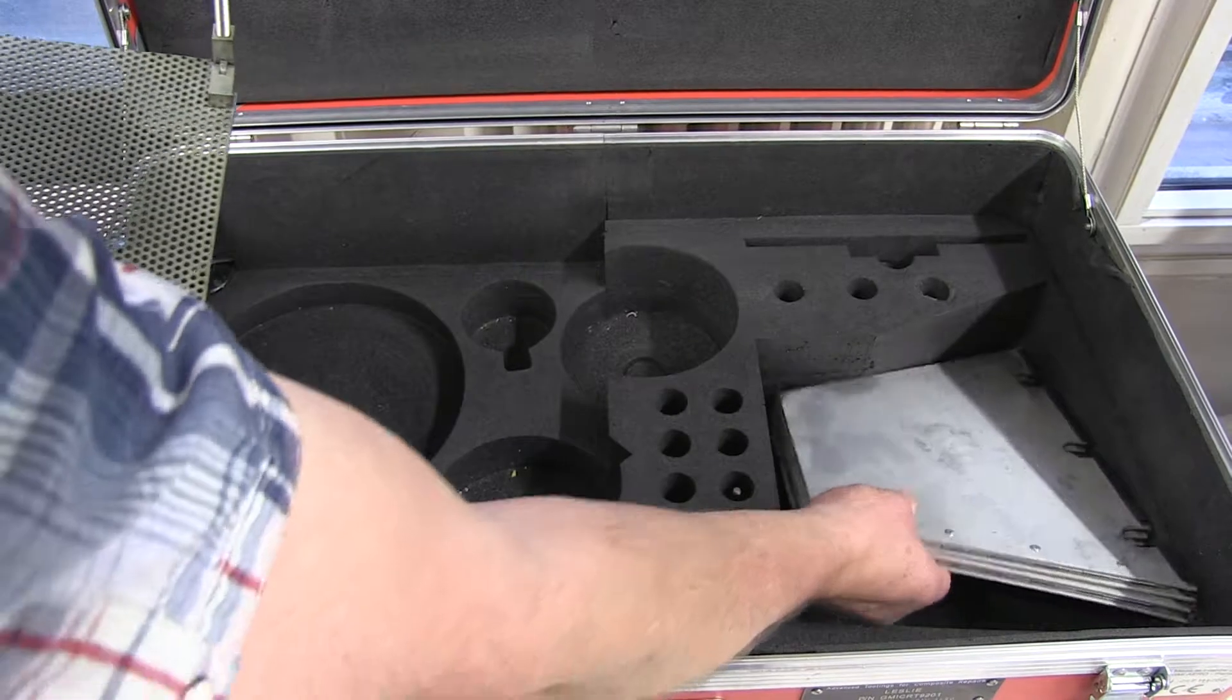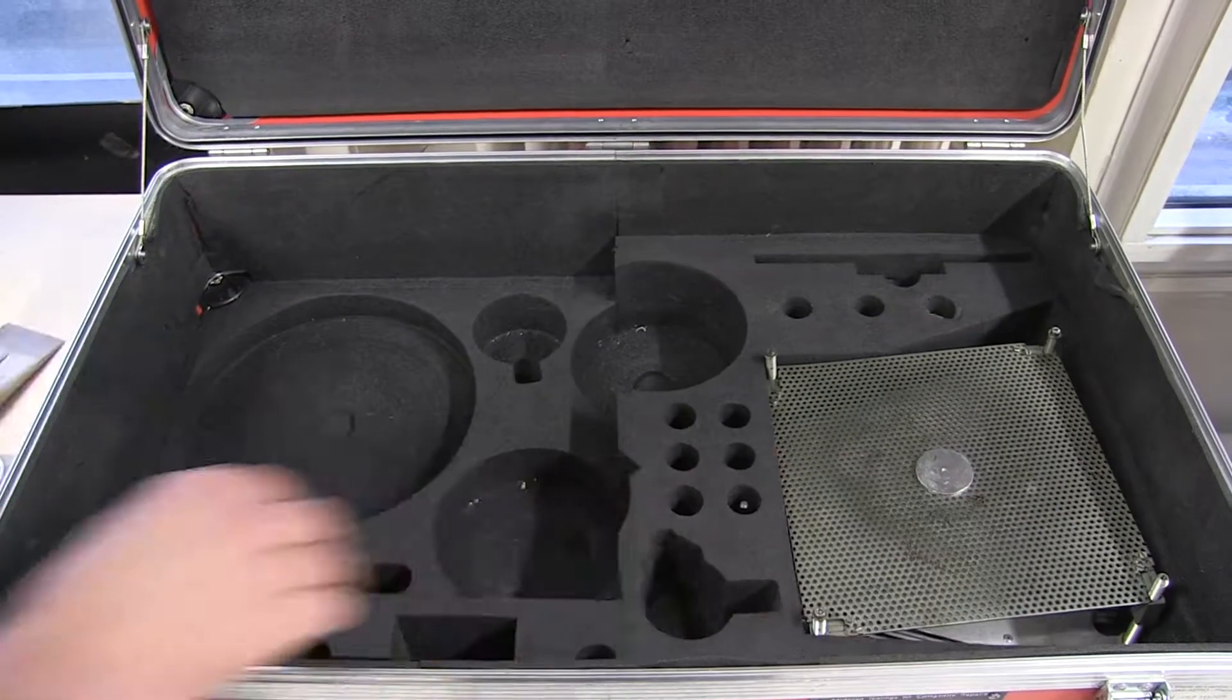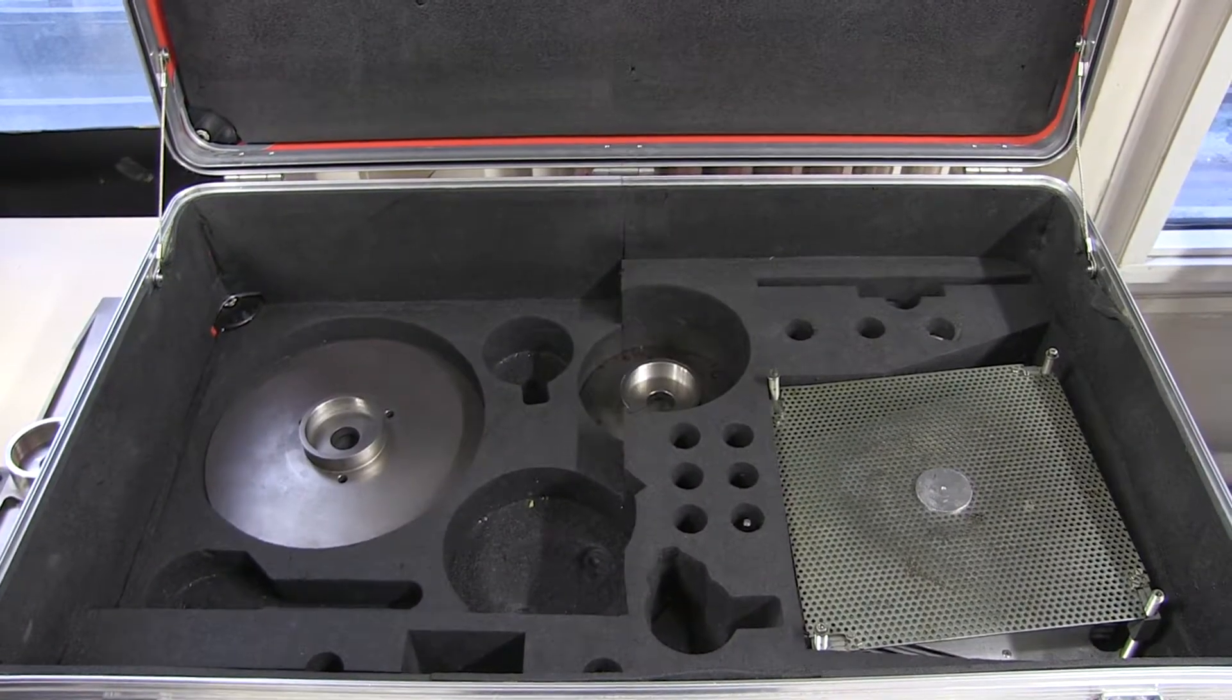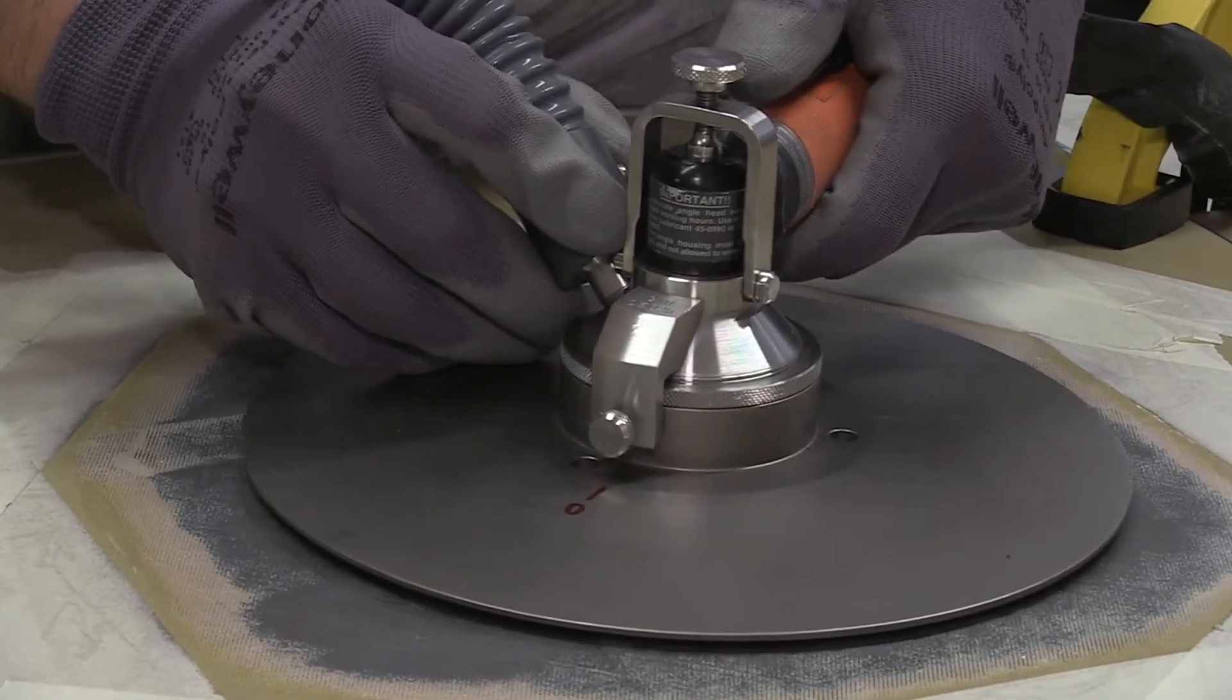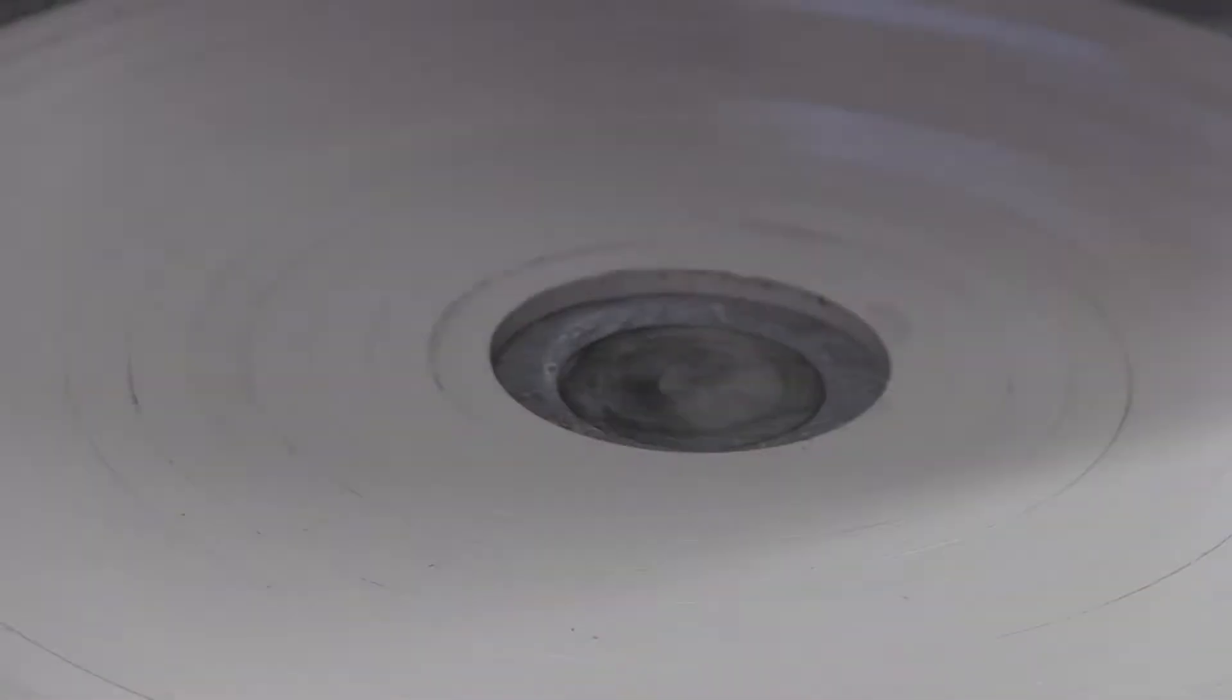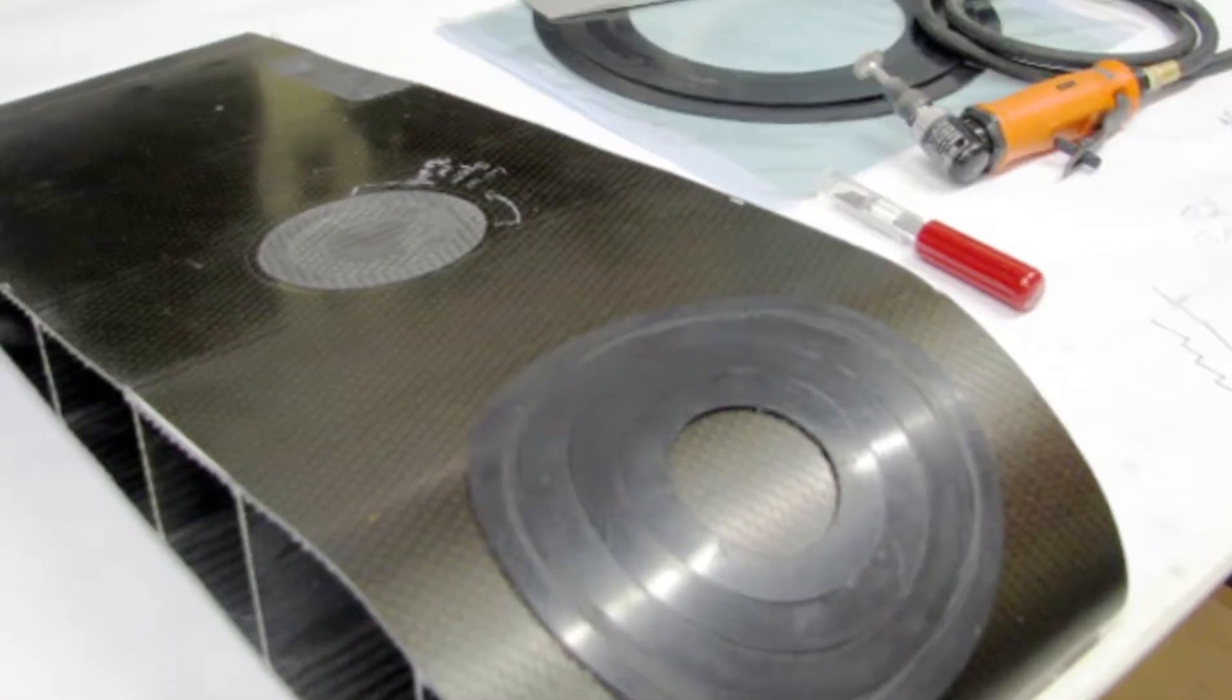This group of innovative equipment has been specially designed for the fast and repeatable machining of composite structures. For example, it allows milling with a depth accuracy of just a tenth of a millimeter, even on curved surfaces.